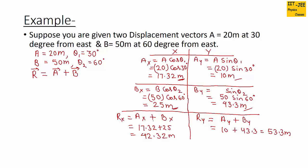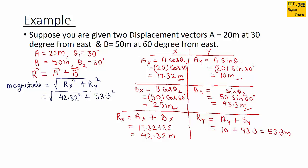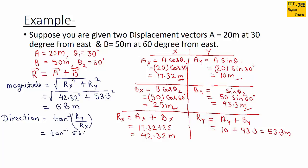Now we have the x and y components of resultant vector r. For magnitude we use the formula: square root of (rx² plus ry²), which is square root of (42.32² plus 53.3²), and this gives us 68 meters. For direction we use: theta equals tan inverse of (ry over rx), which is tan inverse of (53.3 over 42.32). Make sure your calculator is set to degrees — this gives us 51.5 degrees. So 68 meters is the magnitude of resultant r and 51.5 degrees is the direction.